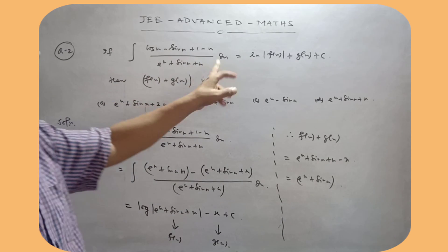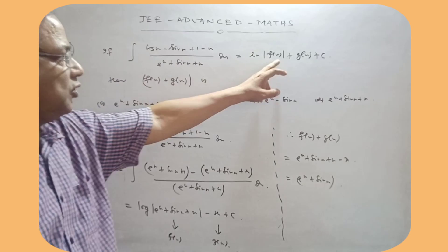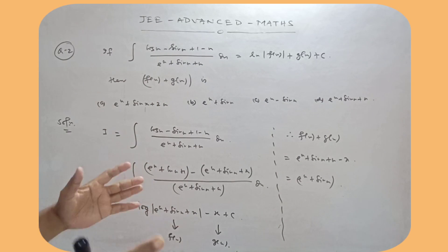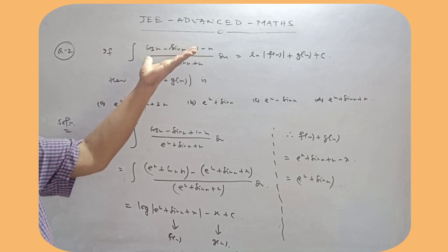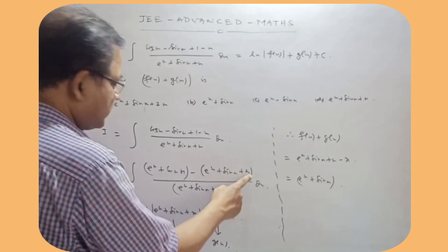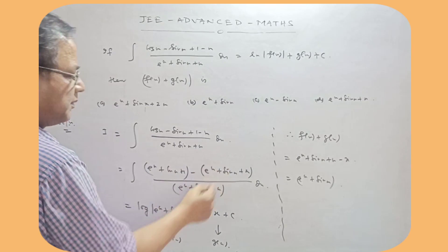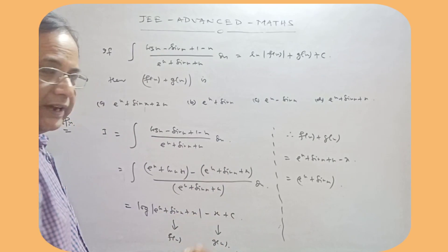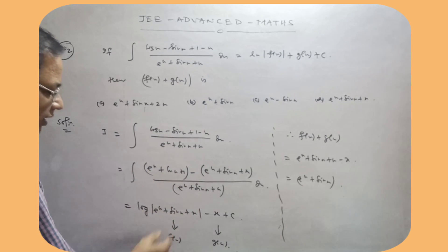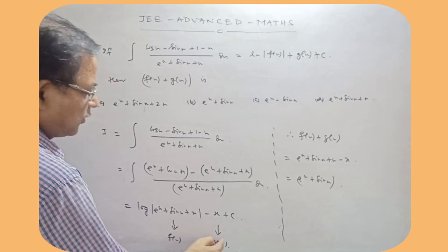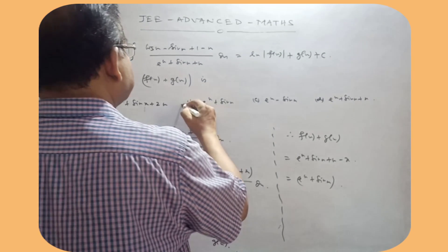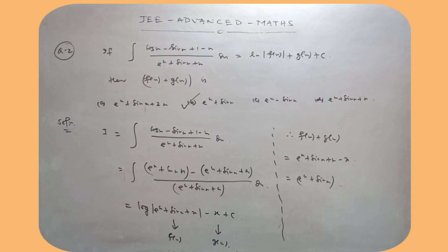Now, if this integration is equal to log of fx plus gx plus C, then you will find out the fx plus gx. So that means here, what you will do here, you will integrate this function. So, like this, I have added and subtracted. This by this and this by this. These two are same, so one. One's integration is x. Now see, this is its derivative. So log of this, this is fx. This is gx. Add these two, x x cancel. E to the power x plus sin x. So that means this option is the right choice.